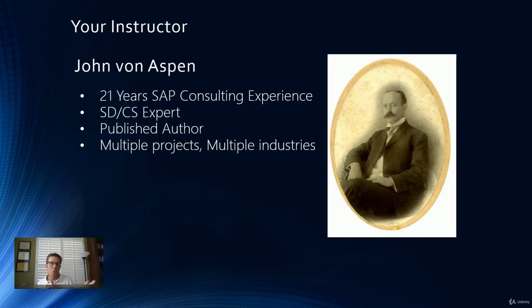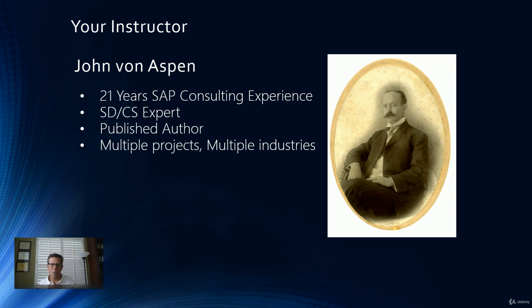So who am I? My name is John Von Aspen. I've been doing SAP consulting and SAP project work for the last 21 years. My focus areas are sales and distribution, customer service, enterprise asset management, e-commerce, CRM, materials management, and a few other things in the SAP space. I'm a published author — I have a book called Getting Started in SAP, about SAP careers, available on Amazon. I have worked on lots of projects from beginning to end, everything from that to parachuting in as a SWAT team fixing projects that are going south. I've worked in lots of different industries: engineering and construction, high tech, manufacturing, services, all kinds of stuff. A lot of projects.